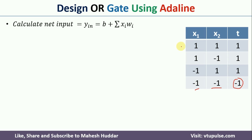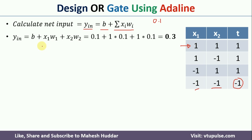We give one example as input to the ADALINE Neural Unit and calculate the output. To calculate the output, we use the equation: y_in = b + Σ(xi × wi), where b is the bias set to 0.1. For input x1=1, x2=1, with W1=0.1 and W2=0.1, putting all values — b + x1·W1 + x2·W2 — we get 0.3 as the output.